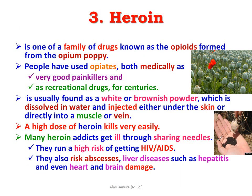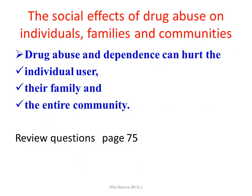Heroin is one of a family of drugs known as opiates, derived from the opium poppy. People have used opiates both medically as painkillers and as recreational drugs for centuries. It is usually found as a white or brown powder, dissolved in water and injected either under the skin or directly into a vein. A high dose of heroin can kill very easily. Many heroin addicts get ill through sharing needles, running a high risk of getting HIV, hepatitis, liver disease, and even brain damage.